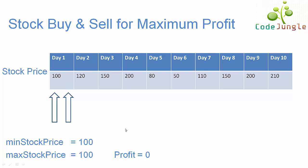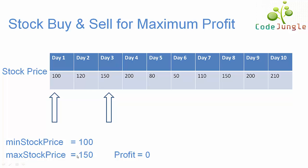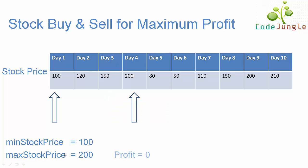Now while iterating, let's consider a condition. If our maximum stock price value, that is 100, is less than the price of day 2, that is 120, then we set the maximum stock price as 120 and let the loop go ahead. We apply the same condition for day 3 and day 4, and hence the value of day 4, that is 200, gets assigned to the maximum stock price.